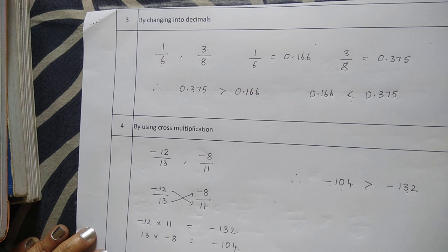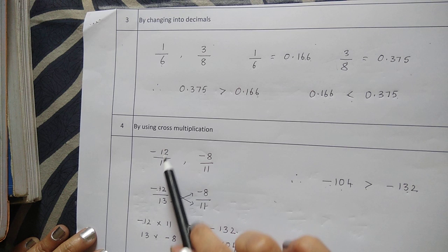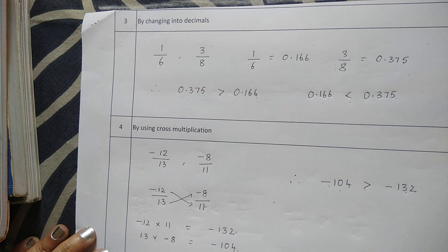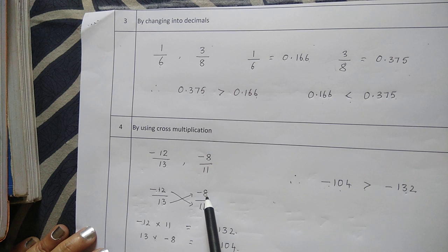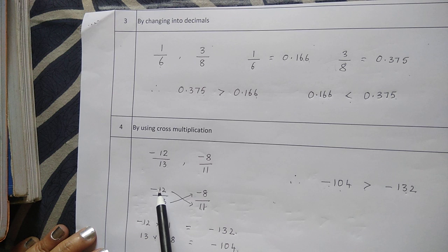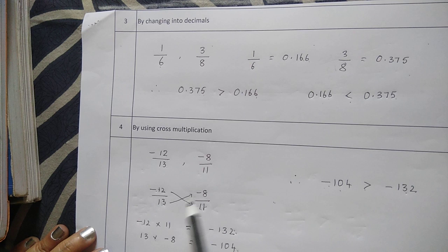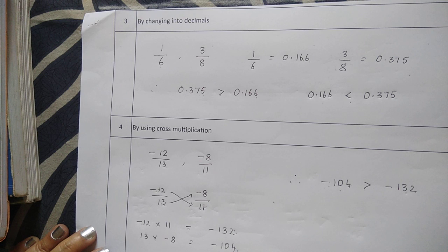The fourth method is by using cross multiplication. To compare minus 12/13 and minus 8/11: multiply the numerator of one by the denominator of the other. Minus 12 into 11 gives minus 132, and 13 into minus 8 gives minus 104. Comparing these, minus 104 is greater than minus 132, so these are the four different methods of comparing rational numbers.